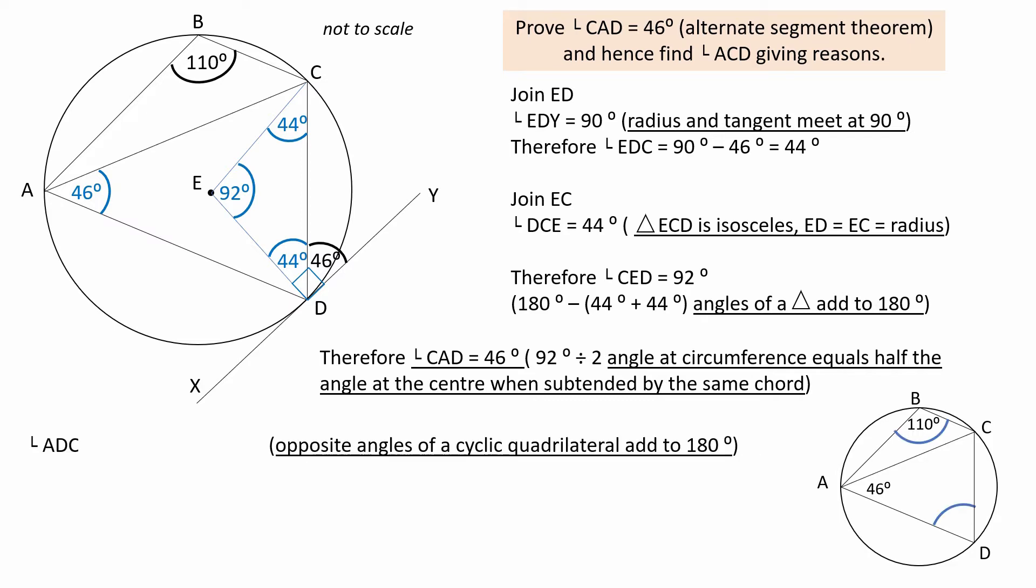Using the circle theorem, which states the opposite angles of a cyclic quadrilateral add to 180 degrees, angle ADC equals 180 minus 110, giving 70 degrees. Record this on the diagram.